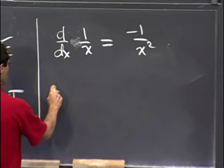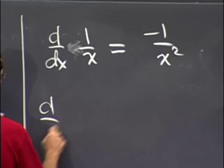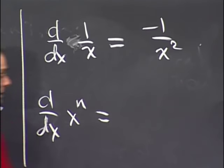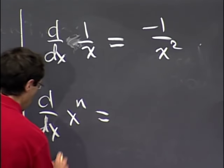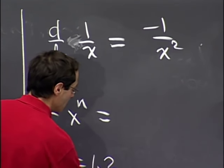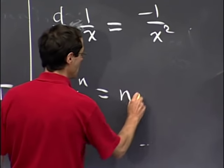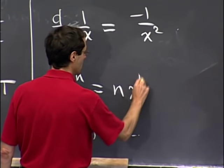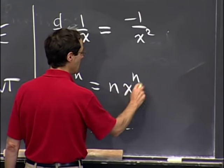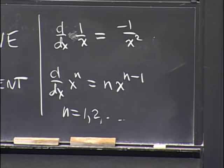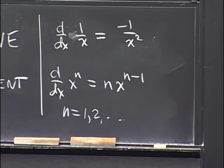We also computed the derivative of x to the nth power for n equals 1, 2, et cetera. That turned out to be n times x to the n minus 1. So that's what we did last time.